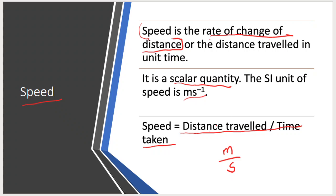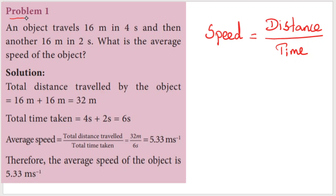Speed is one important property — the rate of change of distance, a scalar quantity, with unit m s⁻¹. Based on this, two problems are given in your textbook. Problem number 1: An object travels 16 meters in 4 seconds and another 16 meters in 2 seconds. What is the average speed of the object? The formula for speed is distance divided by time.